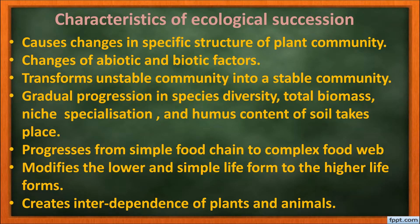Humus content of the soil also changes. After rain, large numbers of plants and grasses arise from seeds dispersed by various agents, and humus content gradually increases. Ecological succession progresses from a simple food chain to a complex food web — in the beginning the food chain may be simple and linear, but as more organisms arrive it becomes complex. It modifies lower, simple life forms to higher life forms and creates interdependence of plants and animals.